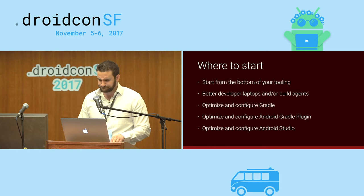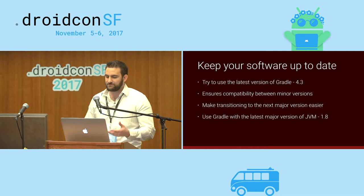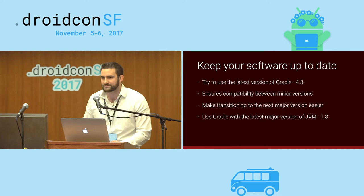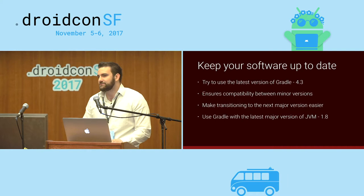Optimizing the Gradle setup: one thing I always encourage is to make sure you have the latest Gradle version. Jumping from 2.14, 3.0, or 3.5 to the latest 4.3 is highly worth it. Upgrades are really easy and help improve build speed and fix bugs. Also make sure you're using Java 8, specifically 1.8, even if you're targeting Java 7 for Android.